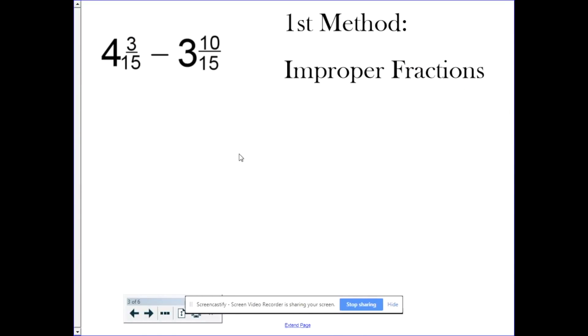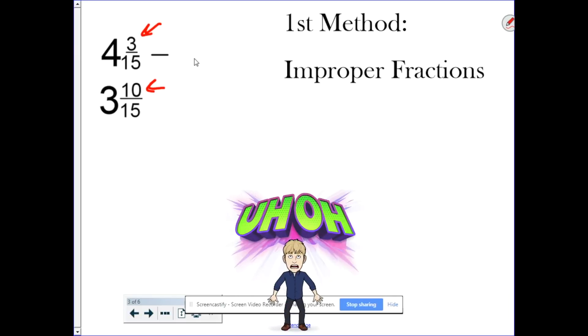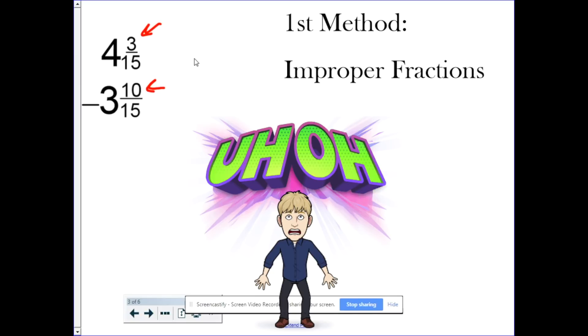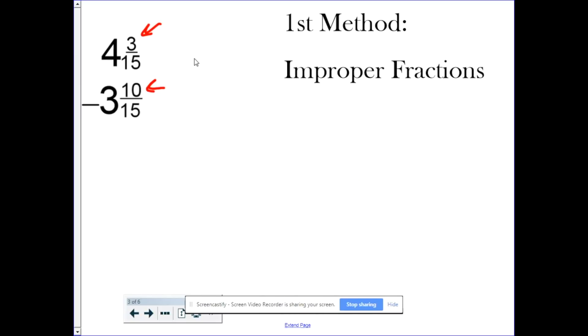Okay. But what happens if the top mixed number's numerator is smaller than the bottom number's? Here's an example. We have 4 and 3 15ths minus 3 and 10 15ths. Well, let's line them up. I've already made common denominators, but look at that. We have 3 minus 10. Well, you can't do that. You can't subtract 3 minus 10. So what the first method is making these mixed numbers into improper fractions, meaning that the numerator is bigger than the denominator.